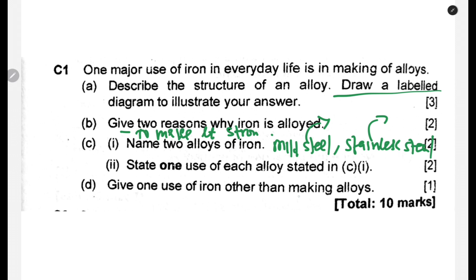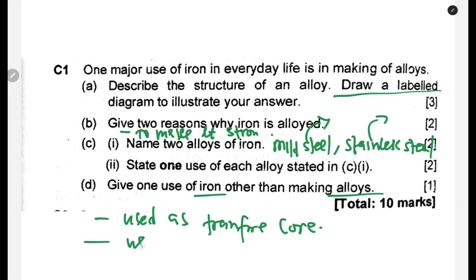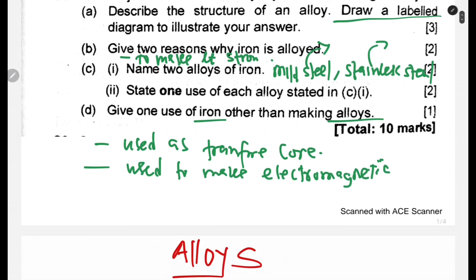The final part asks: give one use of iron other than making alloys. Iron can be used as the core of a transformer, and it is also used to make electromagnets because it is easy to magnetize and demagnetize.